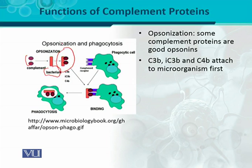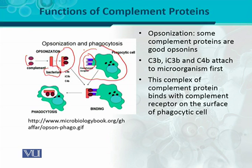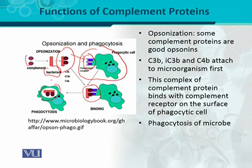Against this bacteria-complement complex, there are complement receptors present on the surface of phagocytes. The complement protein binds with the complement receptor on the surface of the phagocytic cell, and when this complex binds with the receptor, it is engulfed — the bacterium bound to the complement protein is ingested through phagocytosis. This entire process is called opsonization, and it is performed by complement proteins that act as opsonins.